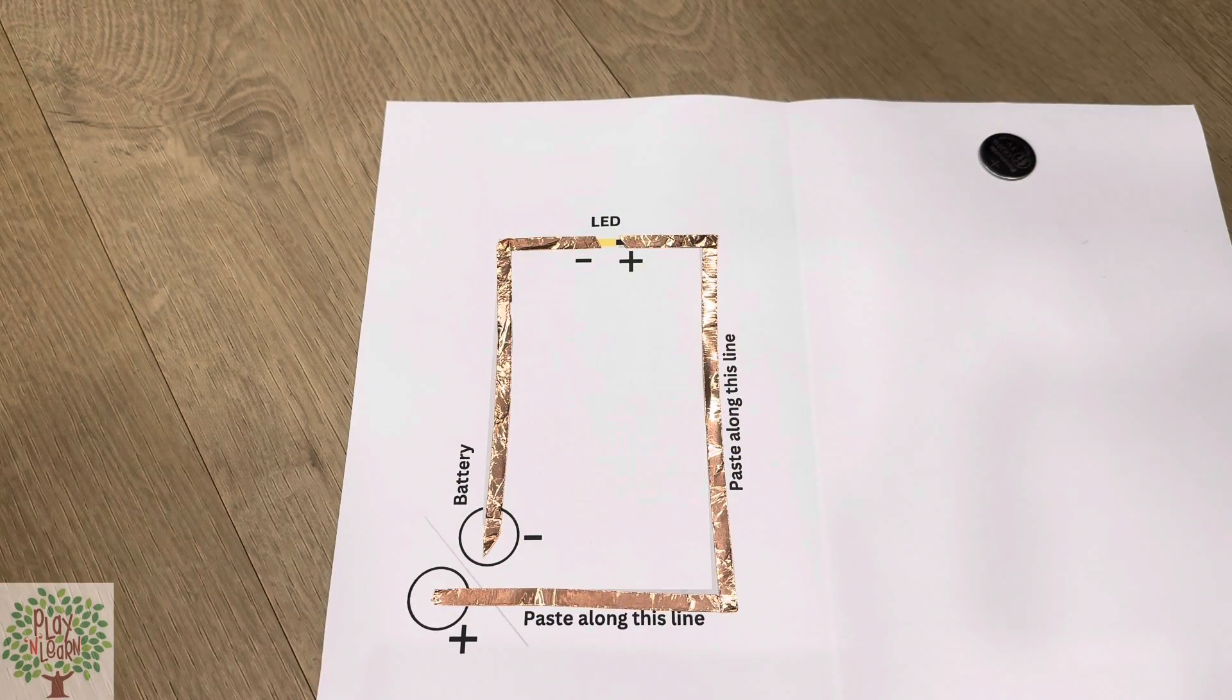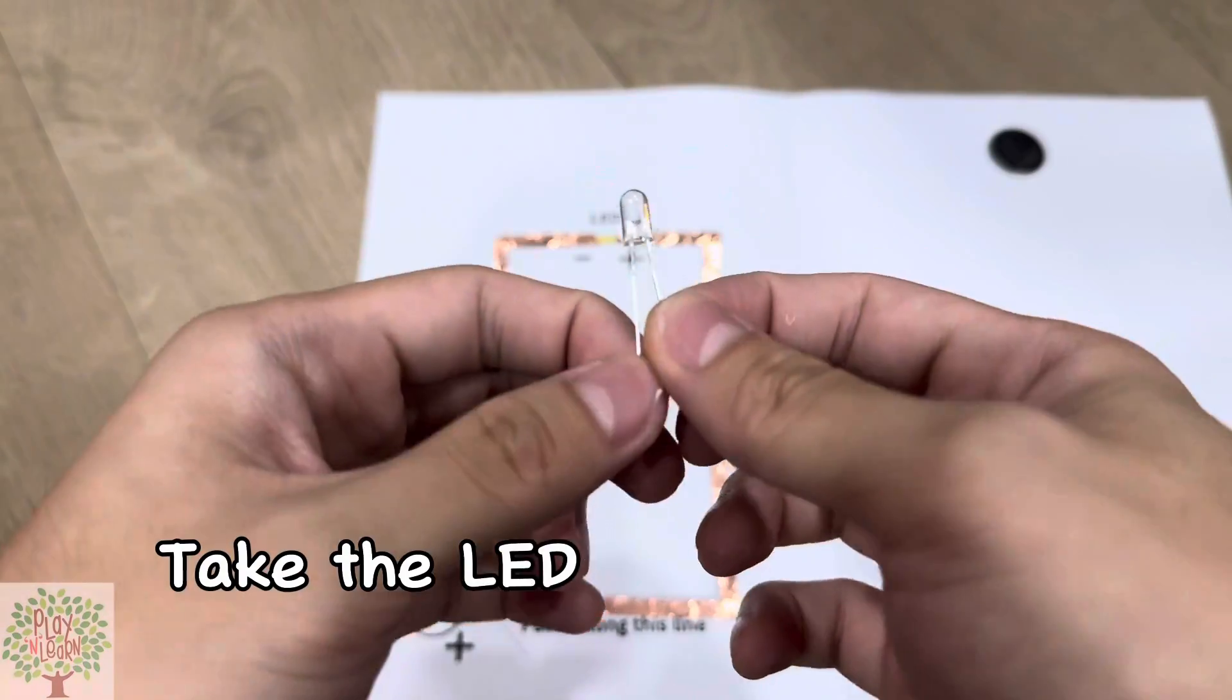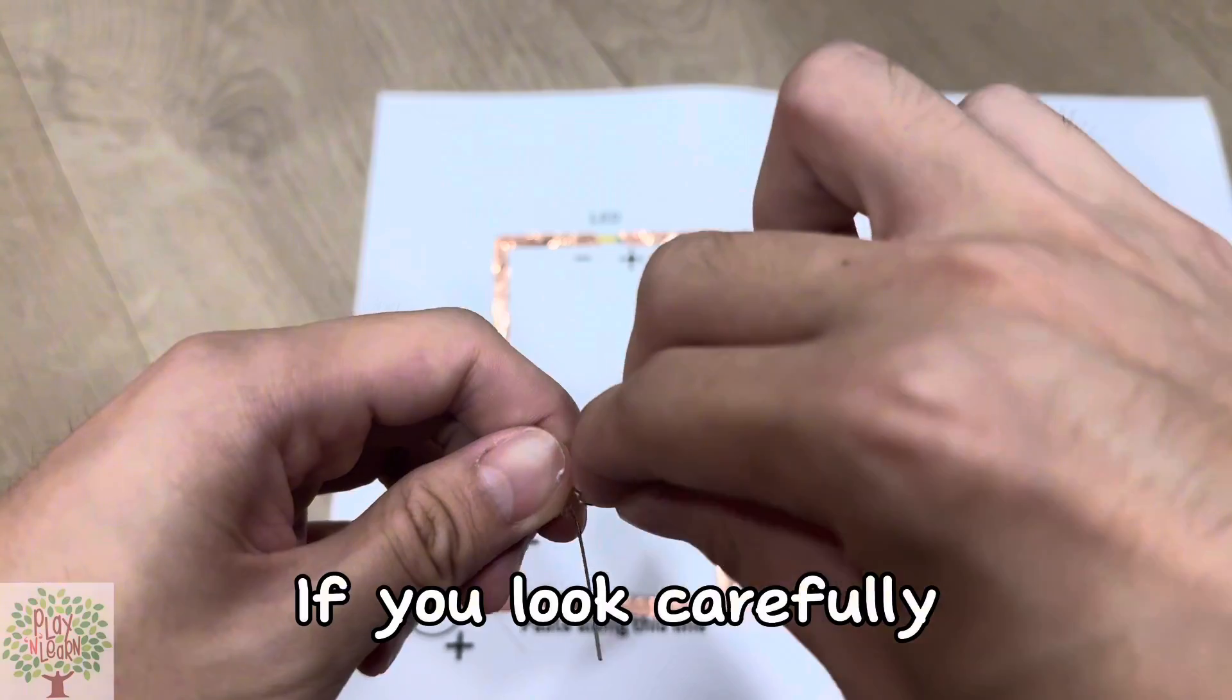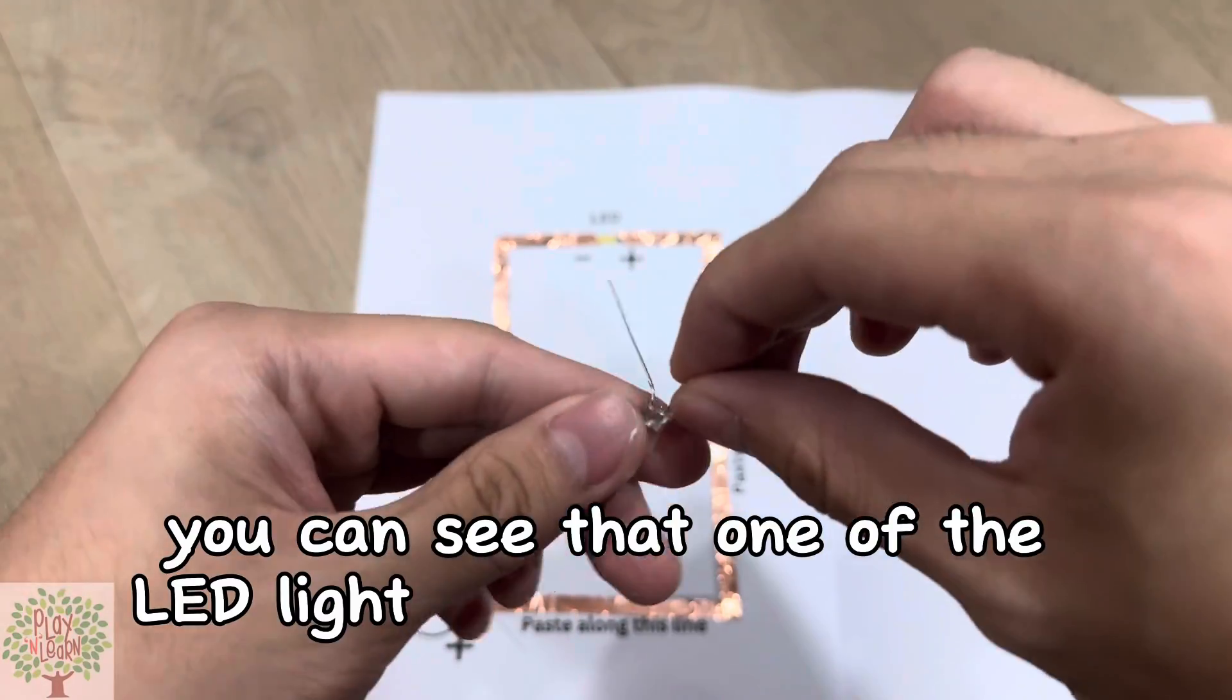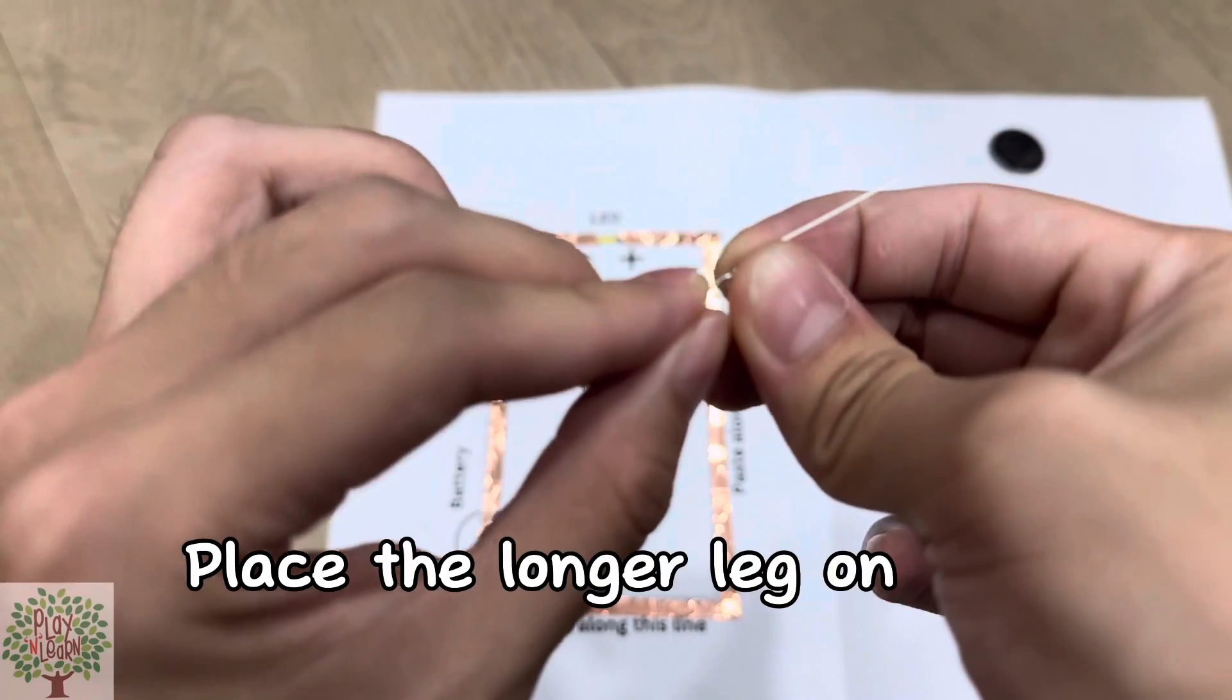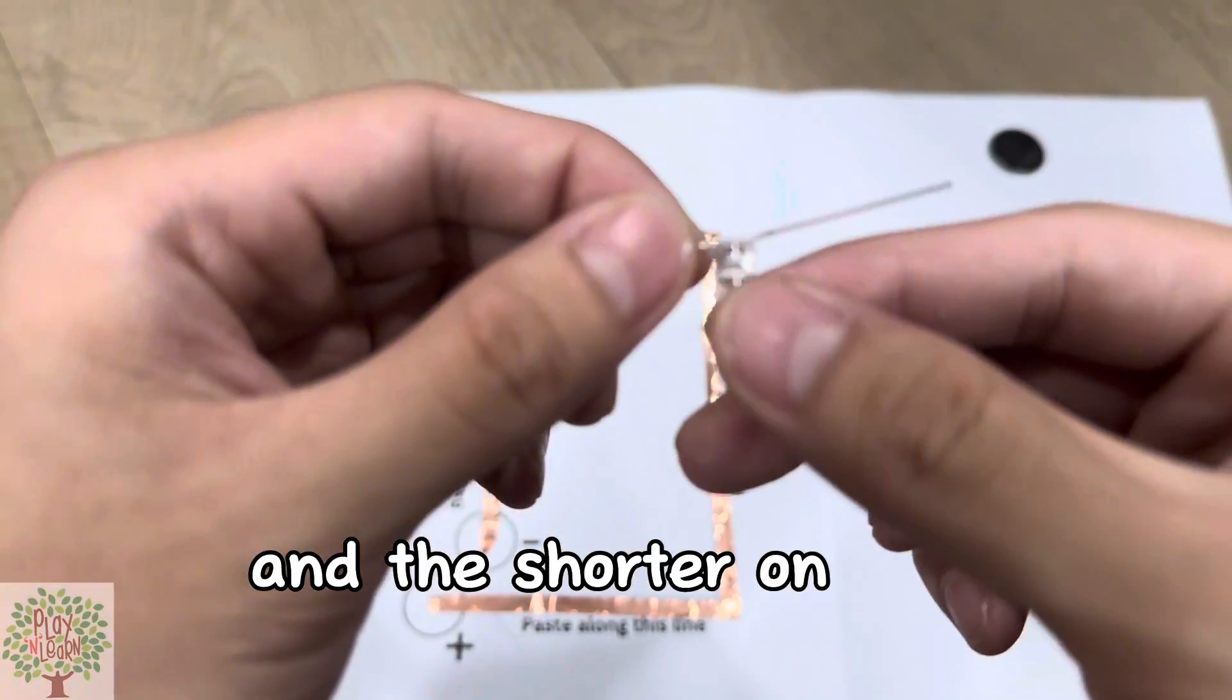So step two, take the LED light and bend the legs outwards. If you look carefully, you can see that one of the LED light legs is longer than the other. Place the longer leg on the plus sign and the shorter on the negative sign.